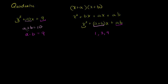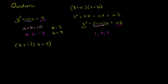If it's 3 and 3, then 3 plus 3 doesn't equal 10. But if it's 1 and 9, then 1 times 9 is 9, and 1 plus 9 is 10. So it does work. a equals 1 and b equals 9, so we can factor this as x plus 1 times x plus 9. If you multiply these two out, you'll see it is indeed x squared plus 10x plus 9.